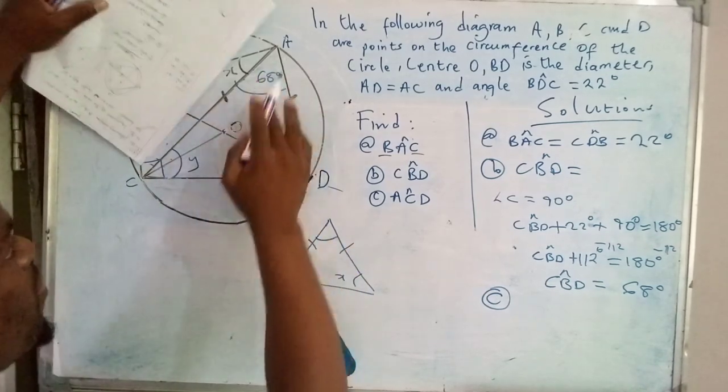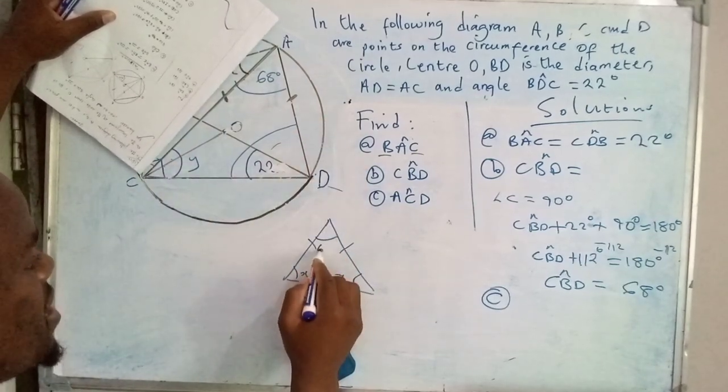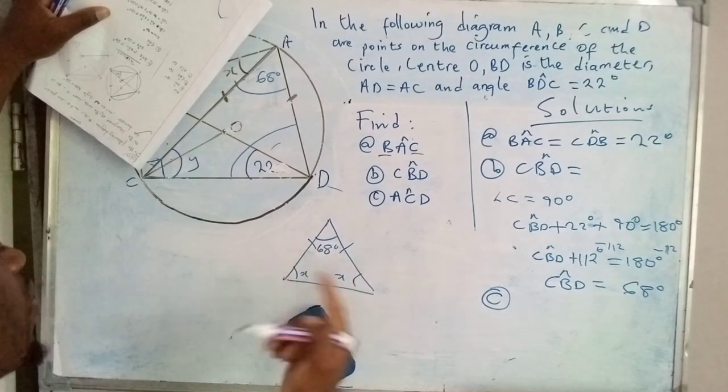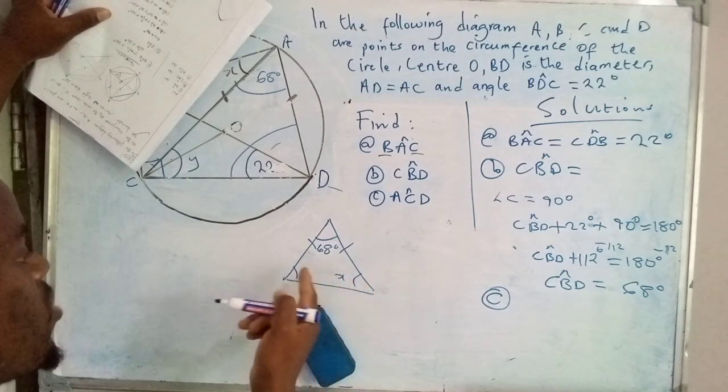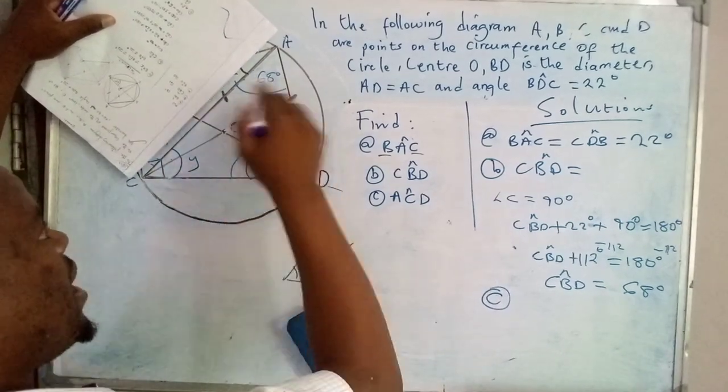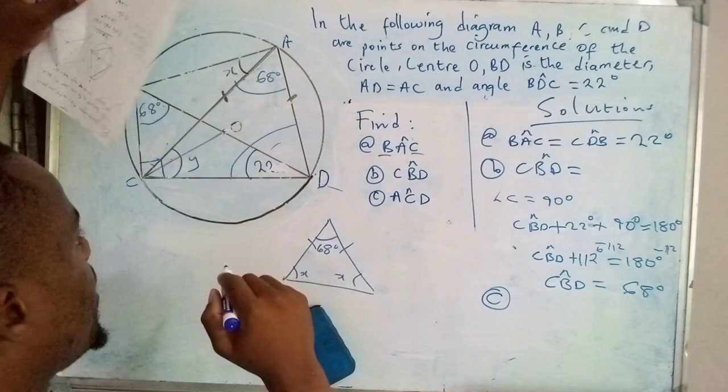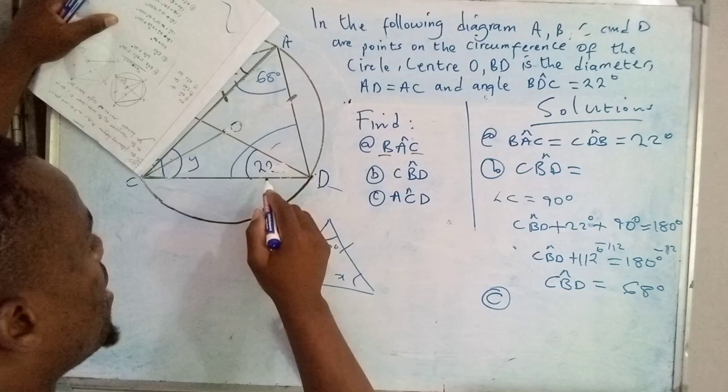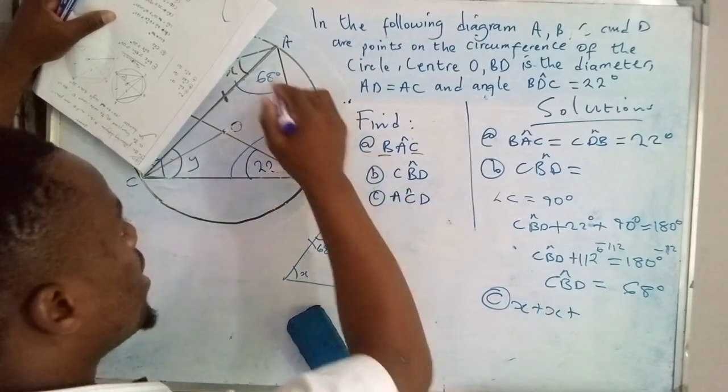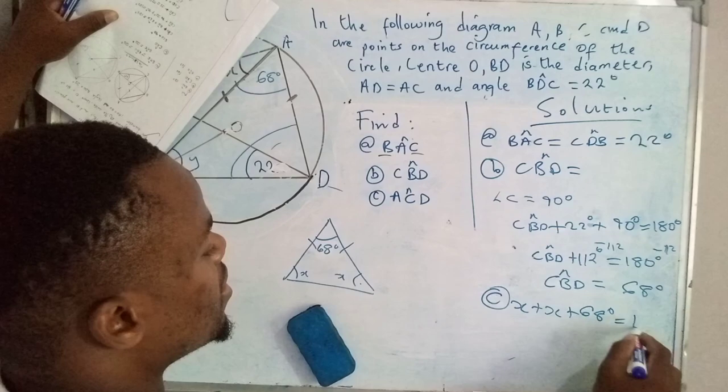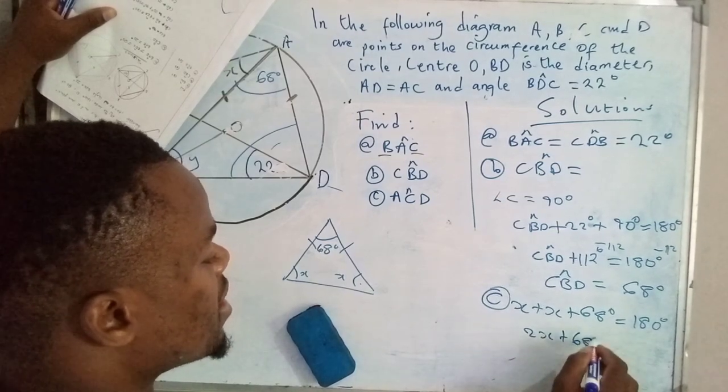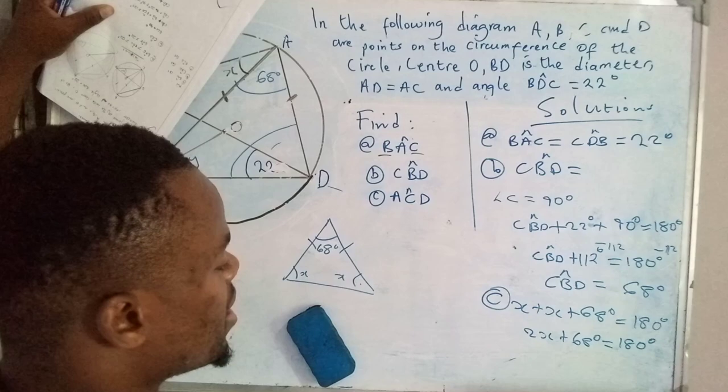I'm going to pull out this triangle. We have 68 degrees here. What are the values of these two angles? Remember, when we determine the value of this angle, we've also determined the value of that angle. I'm going to bring in the theorem which says that when you add all the angles of a triangle, they should give you 180. This one is X, that one is X. So it will be X plus X plus 68 degrees equals 180.